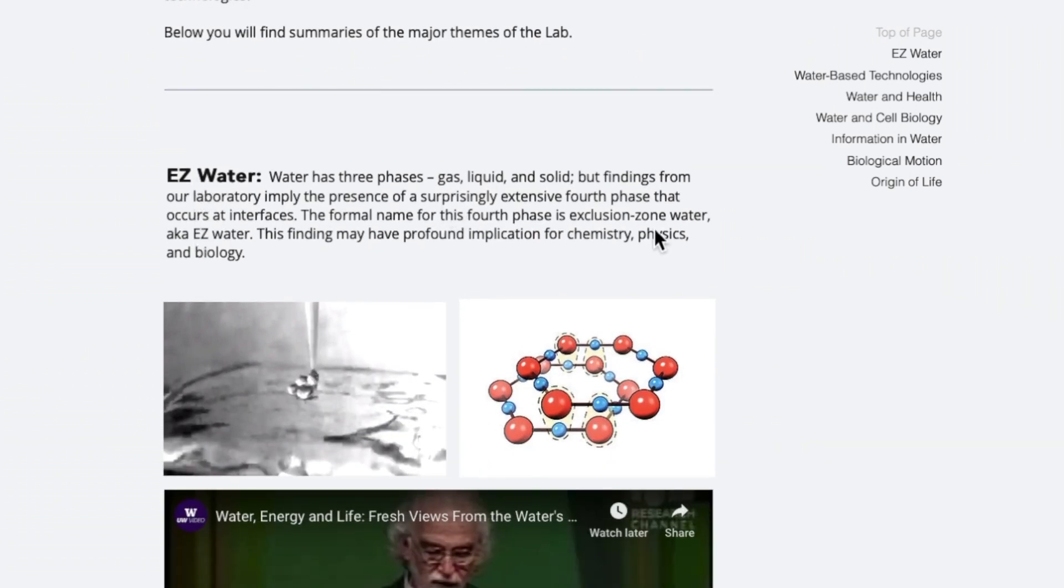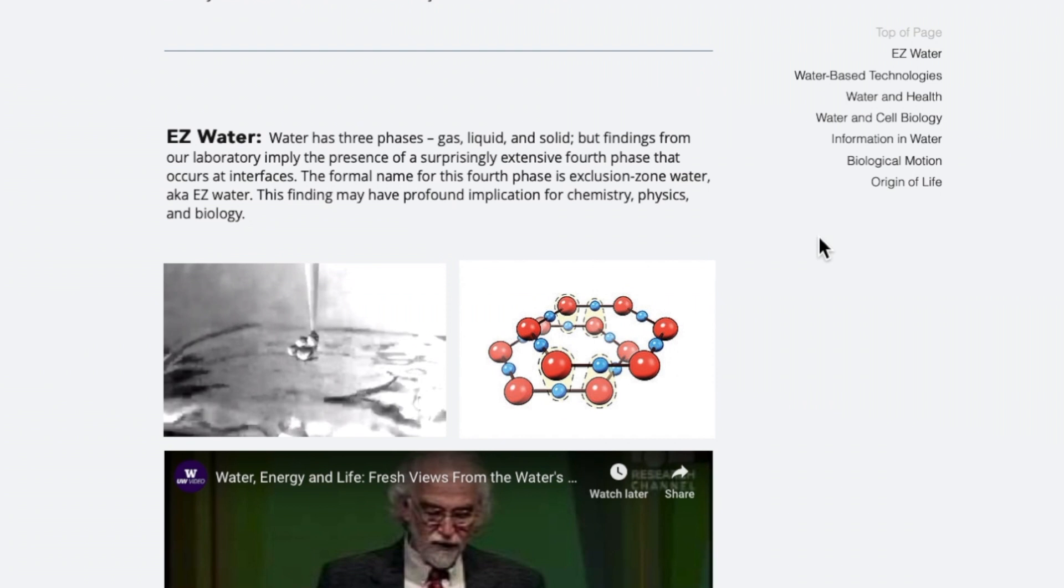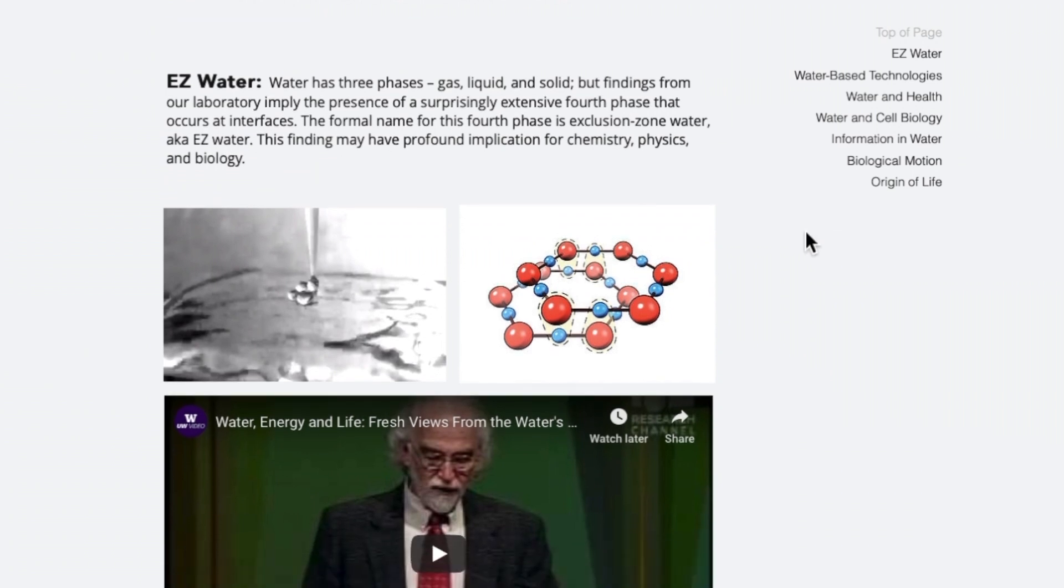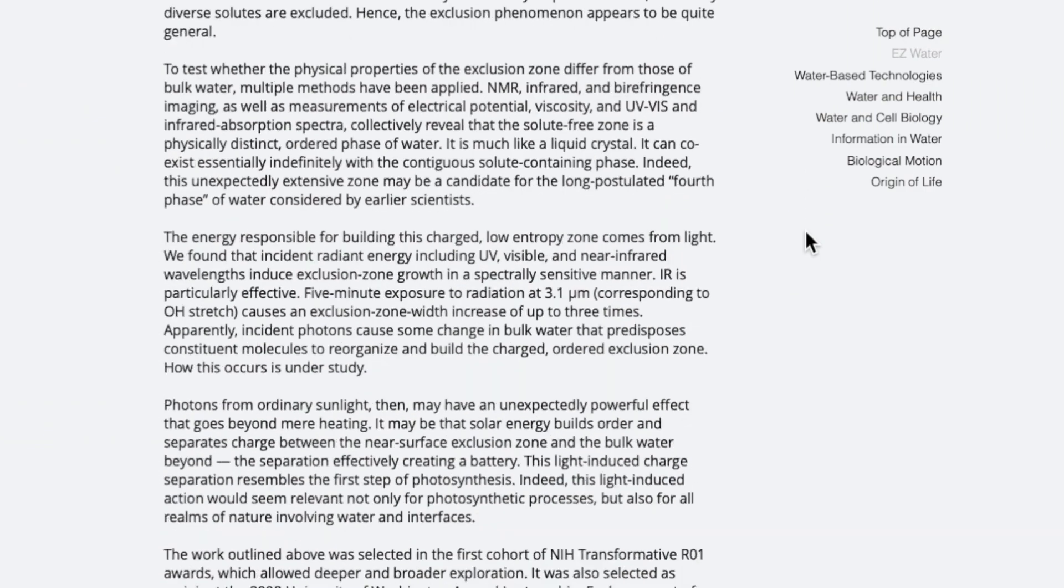And he's discovered EZ water. EZ water has three phases: gas, liquid, and solid, but findings from our laboratory imply the presence of a surprisingly extensive fourth phase that occurs at interfaces. The formal name for this fourth phase is exclusion zone water, also known as EZ water. This finding may have profound application for chemistry, physics, and biology.